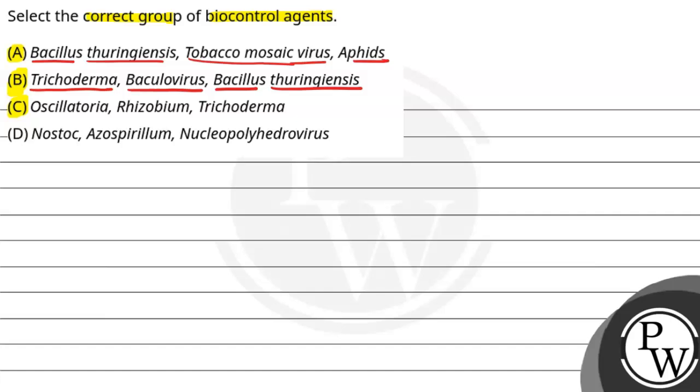Then option C we have Oscillatoria, Rhizobium, Trichoderma. And then the last option we have Nostoc, Azospirillum, Nucleopolyhydrovirus.